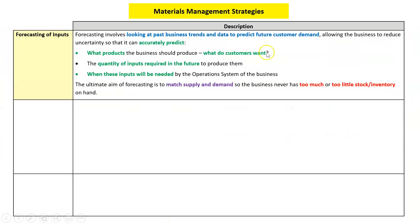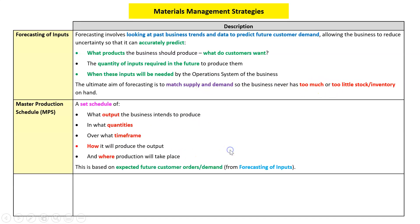To describe forecasting: we look at past business data and trends to predict future customer demand. We're trying to figure out what products the customers want, the quantity, and when. Basically we're trying to match supply of the product with demand so we never have too much or too little inventory. The master production schedule is then setting a schedule of what output we intend to produce, in what quantity and when, how we will produce it and where — and that's based on this forecast.